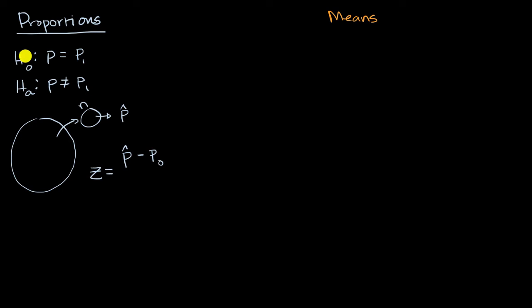And so when we see this p sub zero, this is the assumed proportion from the null hypothesis. So that's the difference between these two, the sample proportion and the assumed proportion. And then you'd want to divide it by what's often known as the standard error of the statistic, which is just the standard deviation of the sampling distribution of the sample proportion.